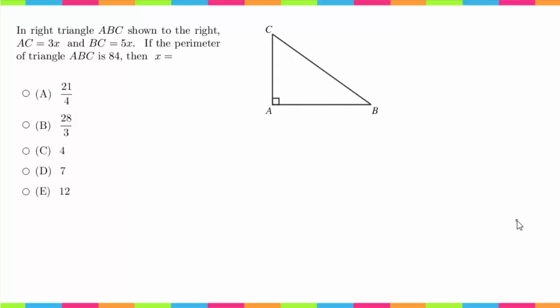Hey guys, welcome back. This question has to do with geometry. The question says in right triangle ABC shown to the right, AC equals 3x and BC equals 5x. If the perimeter of triangle ABC is 84, then x equals what?